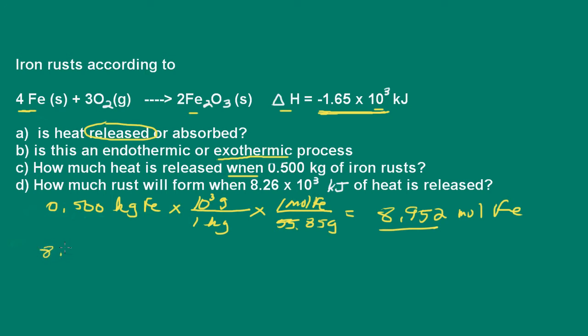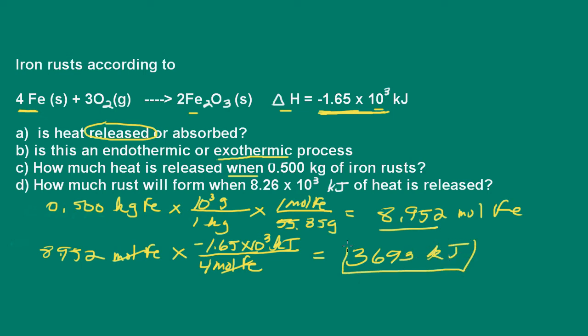So we have 8.952 moles of iron, and now we look at the reaction. 4 moles of iron will produce 1.65 times 10 to the third kilojoules of heat. So 4 moles of iron, I want my moles of iron to cancel, will produce 1.65 times 10 to the third kilojoules. And let's go ahead and calculate that.